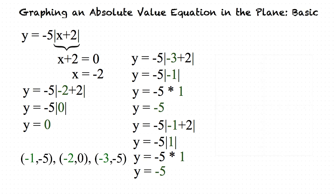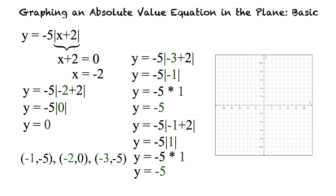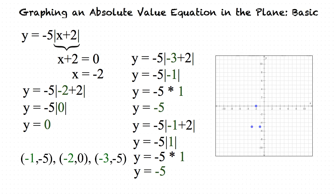Next, we can plot these points in order to graph our equation. Our vertex is at negative 2, 0; then negative 1, negative 5; and negative 3, negative 5. Finally, we can connect the lines and graph our final result.